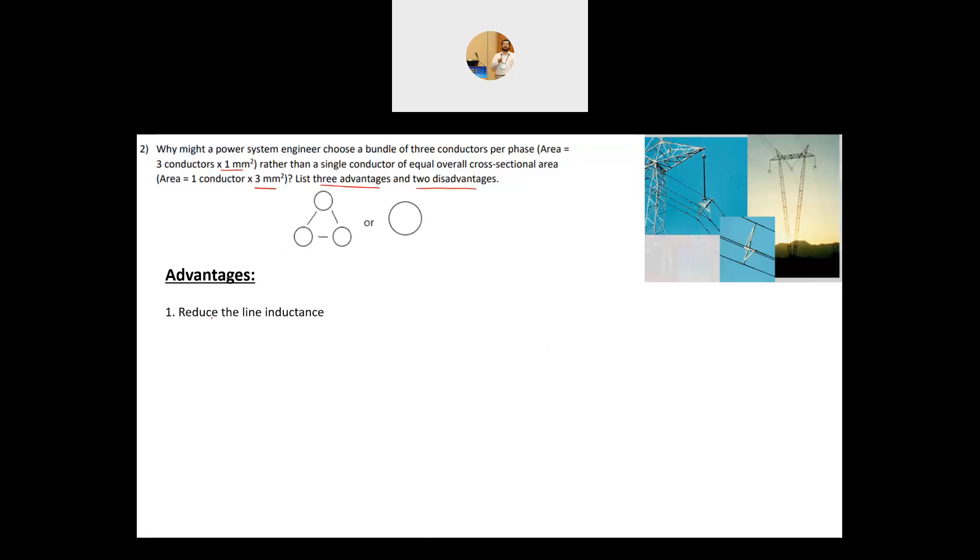The first advantage for that it will reduce the line inductors and the line inductors can be calculated using the following formula. 2 times 10 to minus 7 ln GMD. Now we know what is GMD. GMD deals with the distance between the three phases divided by geometric mean radius of the bundle.